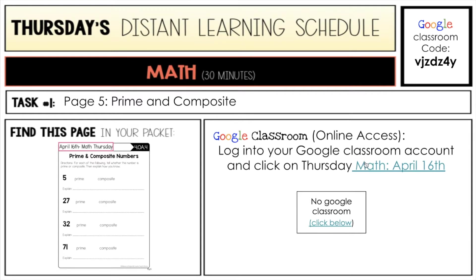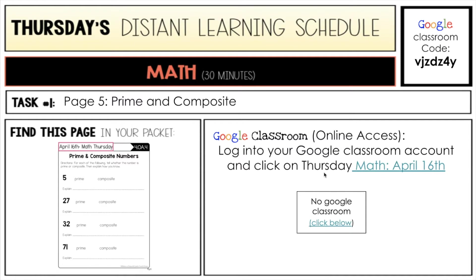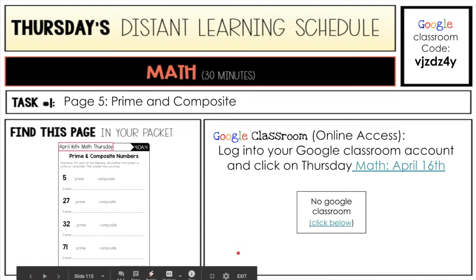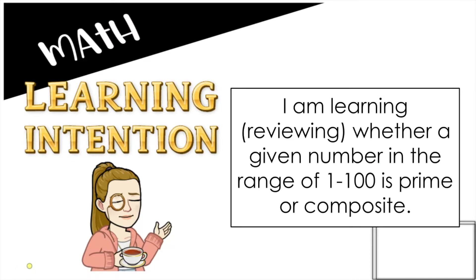You can access this on Google Classroom, and you have access to a form I made for you if you are not using Google Classroom. Taking out a fresh sheet of paper is always an option I love to see you guys doing. Our learning intention for today is — we're always saying 'I am learning' — but we are actually learning and reviewing whether a given number in the range of 1 to 100 is prime or composite.